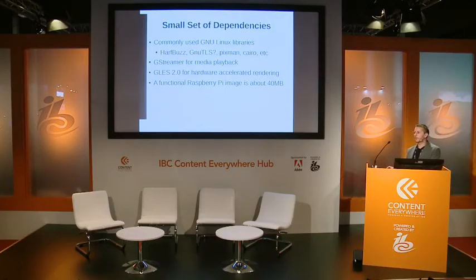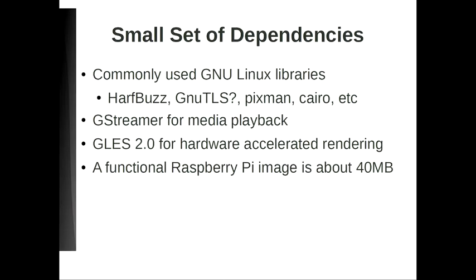We have a really small set of dependencies, which is one of the requirements of the browser. We have some small and very common Linux libraries like HarfBuzz for text rendering, TLS for encryption and security, Pixman for handling graphics, and Cairo for graphics rendering. The two key dependencies are GStreamer for media playback and an OpenGL ES 2.0 implementation to achieve hardware-accelerated rendering.